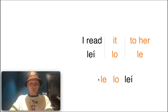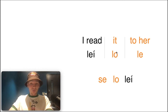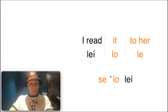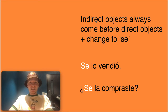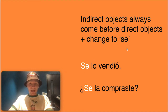But le lo leí sounds a bit crazy — and actually that's because it is. There's an important rule: when the indirect object pronoun le comes before the direct object pronoun, le changes to se. So it becomes se lo leí. Indirect object pronouns always come before direct object pronouns, and le changes to se in this combination.